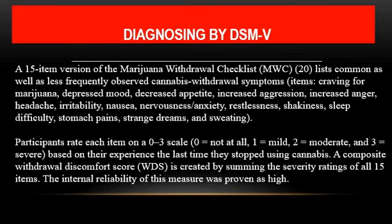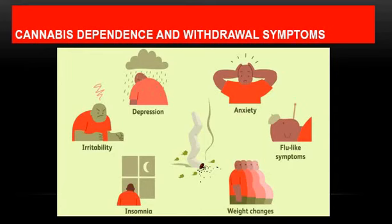There is a scale called the Marijuana Withdrawal Checklist which contains 15 symptoms including depressed mood and decreased appetite. Symptoms are rated on a 0 to 3 scale: 0 means not at all, 1 means mild, 2 means moderate, and 3 means severe. A composite withdrawal score is calculated as the sum of all 15 items; a higher score indicates greater severity, meaning treatment is necessary to prevent withdrawal and tolerance effects.